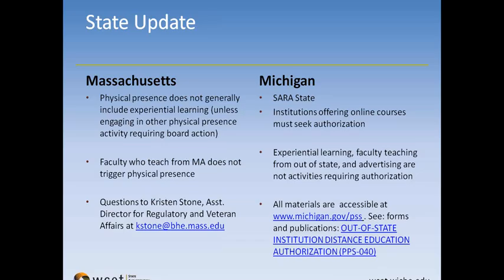The state of Michigan is a relatively new SARA state, having joined towards the end of 2015. Michigan did not formally regulate online learning, but now does. Institutions that are not SARA members must seek authorization if offering online courses to students in Michigan. However, experiential learning, faculty teaching from out of state, and advertising are not deemed activities that require authorization. Materials can be found at the links provided on this slide.